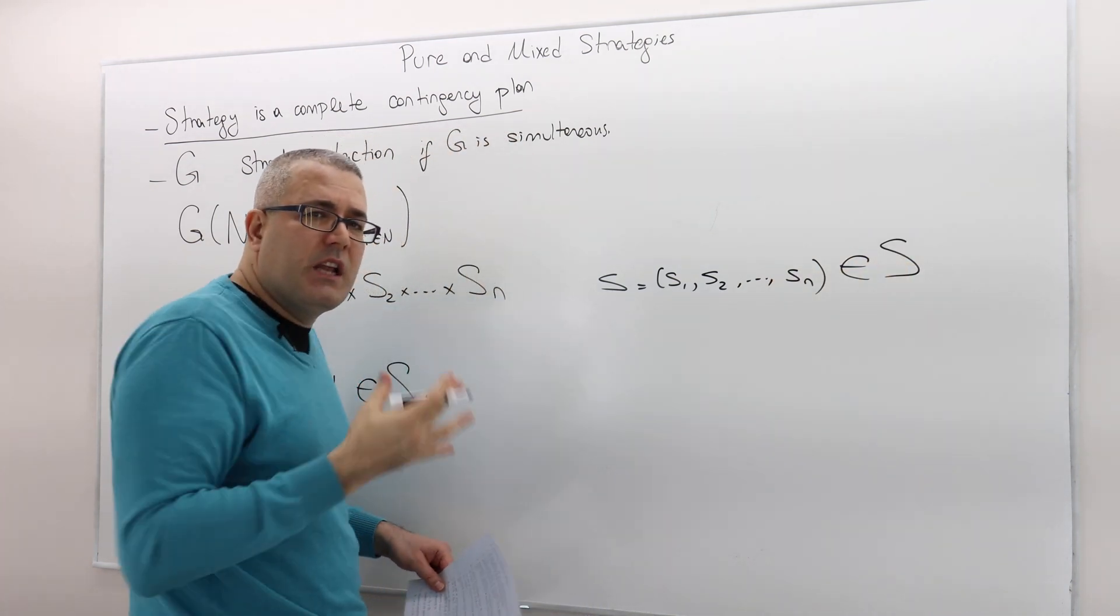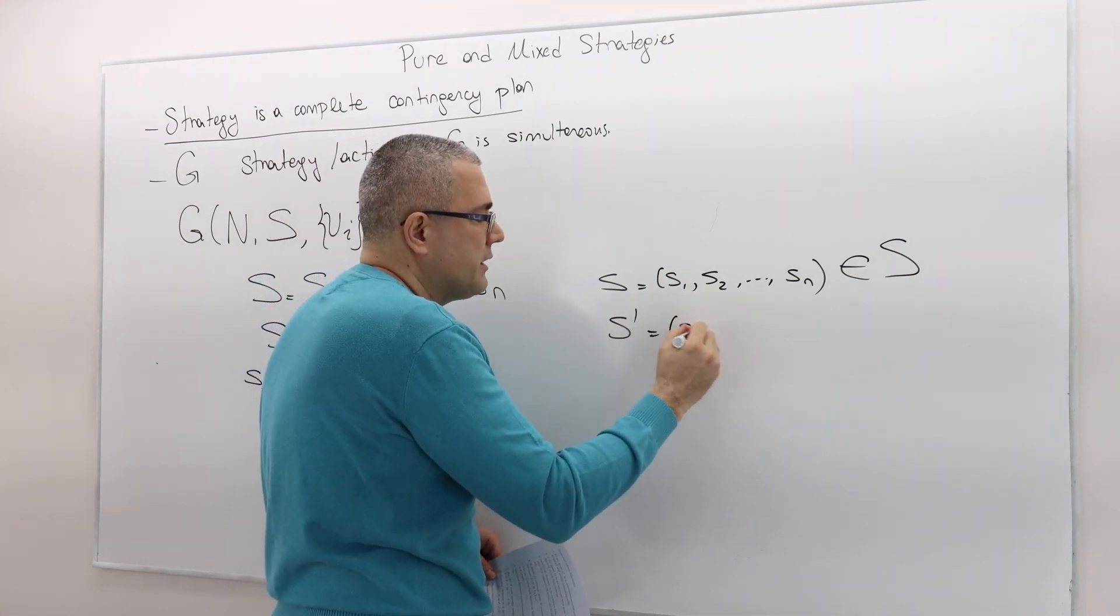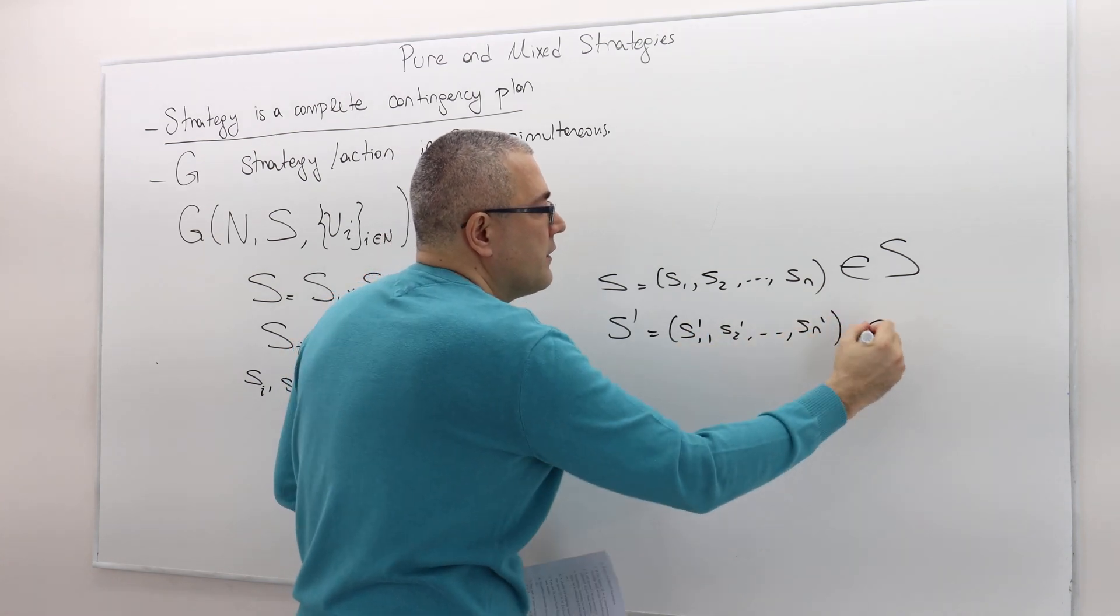If you want to denote another strategy profile, we use prime, double prime. So it's S1 prime, S2 prime, S_N prime. This is another.